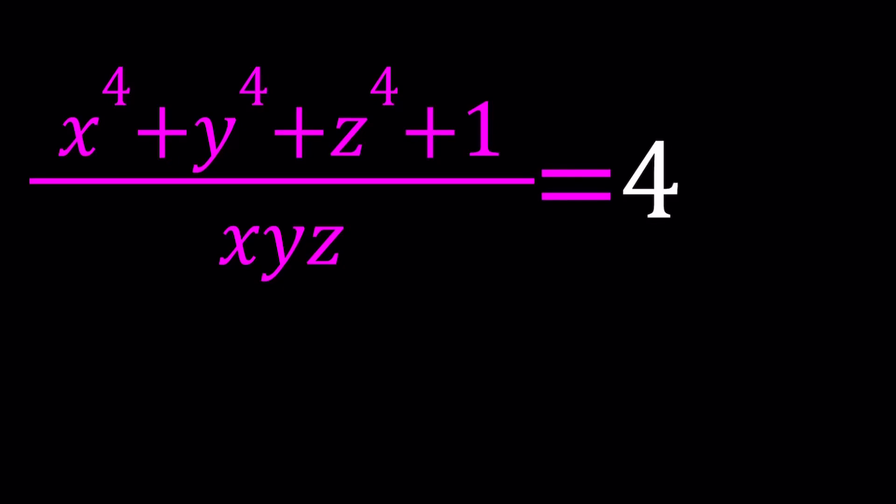Hello everyone. In this video we're going to be solving another nice problem from Croatia. We have x to the 4th plus y to the 4th plus z to the 4th plus 1 divided by xyz equals 4. Now this is not the original form of the problem, I just turned it into a fraction.